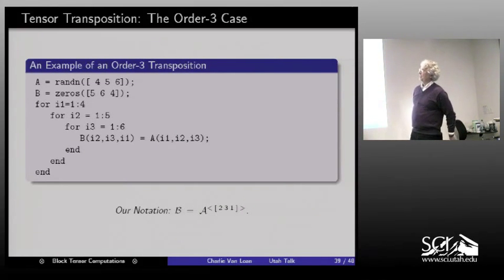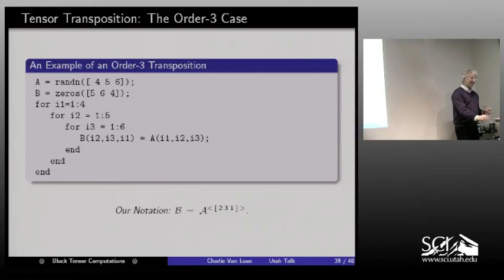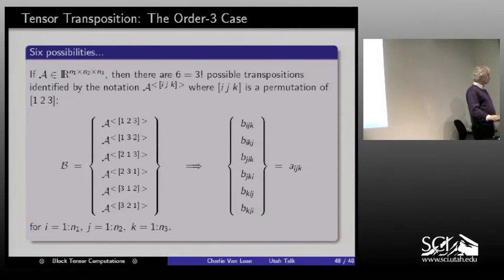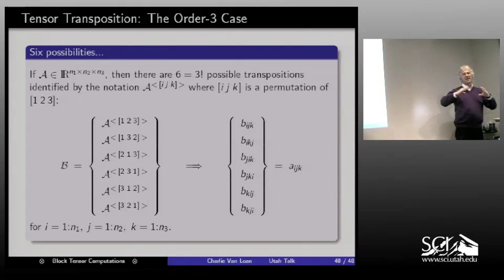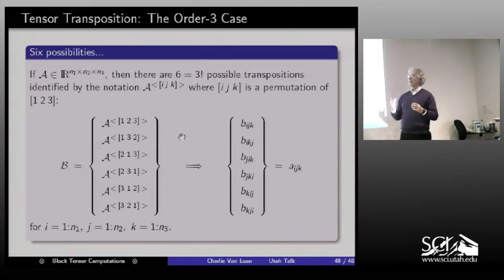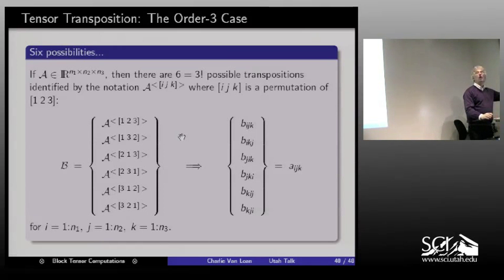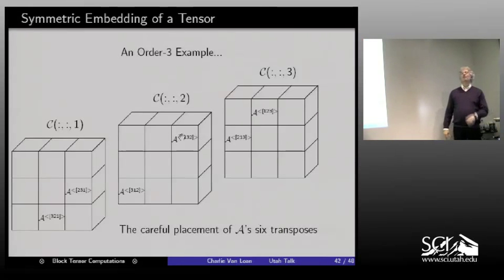Symmetry is very important in the tensor setting. There are many more options for symmetry among tensors — you have a transposition operation where, for a third-order tensor, there will be D-factorial different possible transpositions. An analog of this embedding: is there a way to embed a general tensor into a supersymmetric one? A supersymmetric tensor has the property that no matter how you order those indices, you get the same thing. You give me a general third-order tensor, possibly rectangular, and I embed it into a 3×3×3 supersymmetric block tensor: in block I-J-K I place the I-J-K transposition of A.